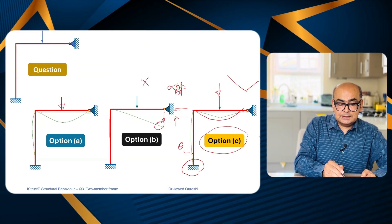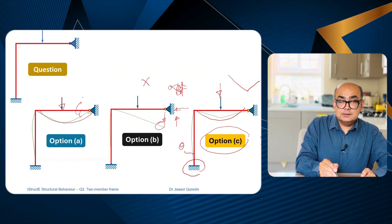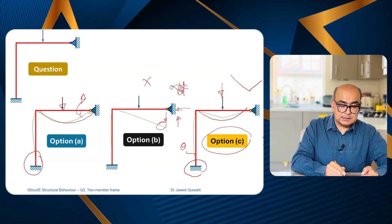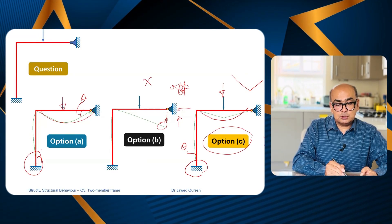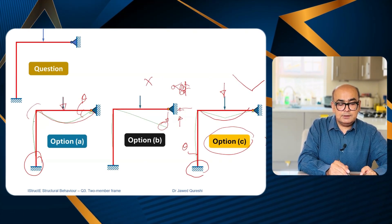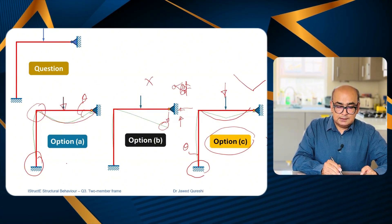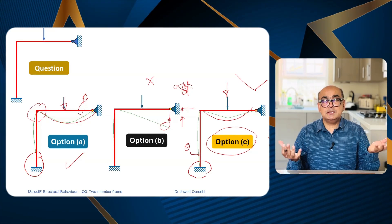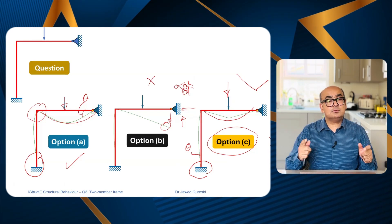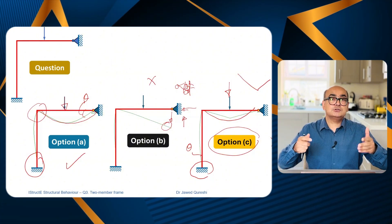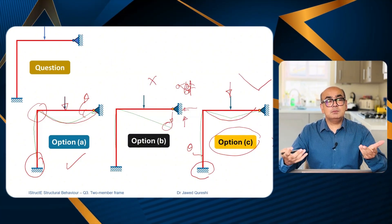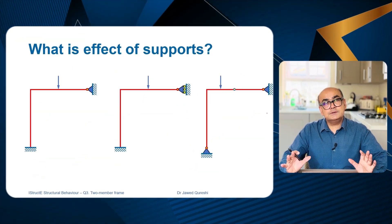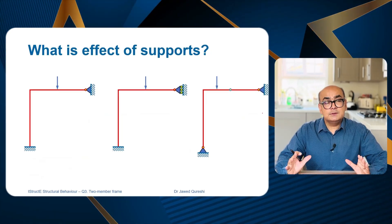This leaves us only option A, which is the correct answer. When we apply loading, the beam smoothly deflects. There is a theta angle at the pin support because a pin support always allows rotation, whereas a fixed support does not rotate at all. That is how we determine deflected shapes — by process of elimination and by applying the basic rules.